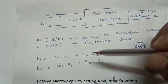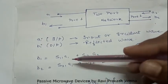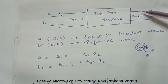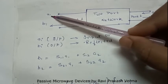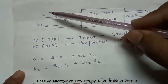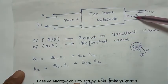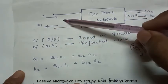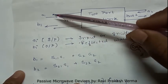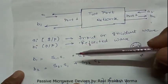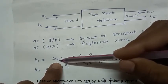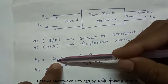So what does S12 signify? S12 means the incident wave impacts port 2 while the reflected wave is taken from port 1 — the output is taken at port 1 while the input is provided at port 2. In the general equations, b1 is the reflected wave from port 1, which arises due to incident waves at port 1 and port 2. The term S11 means input is provided at port 1 and output is taken at port 1.